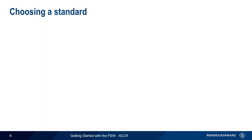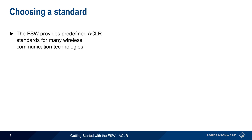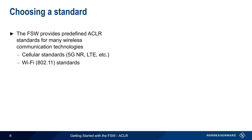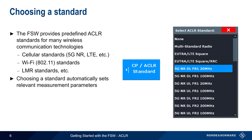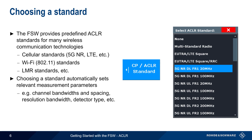Most ACLR measurements are based on standards, and the FSW provides predefined standards for many wireless communications technologies, including cellular standards such as 5G NR and LTE, Wi-Fi or 802.11 standards, and various land mobile radio and other standards. These are selected by pressing CP-ACLR Standard and then selecting from the list of available standards. Choosing a standard automatically sets the relevant measurement parameters — for example, channel bandwidth and spacing, resolution bandwidth, detector type, etc. The FSW also allows users to edit, create, and save or load their own standards.